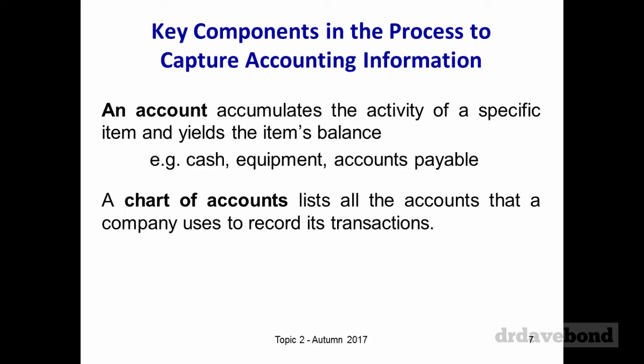Journal entries are the listings of transactions, and the account is where they all end up. A chart of accounts is like a website sitemap — it gives you an overview of all the different accounts. In this example, assets are in the hundreds, liabilities in the 200s, equity in the 300s. You can have sub-accounts within them; for example, if you're Woolworths, you'd have separate sales revenue accounts for groceries, service stations, and other divisions.